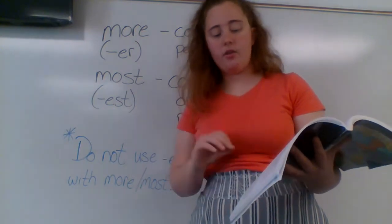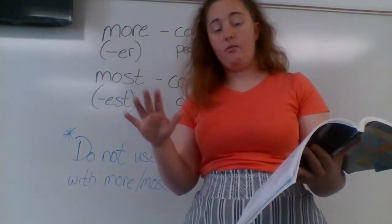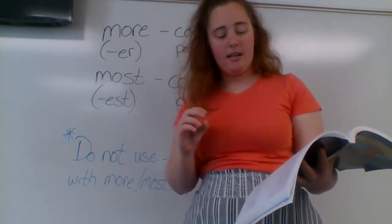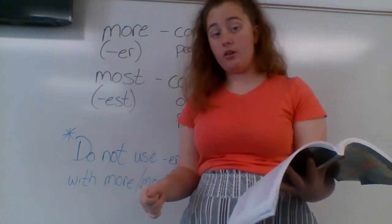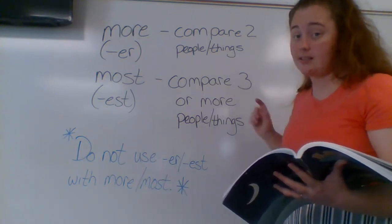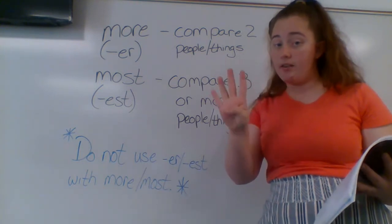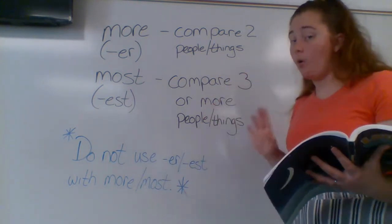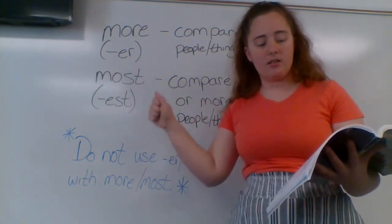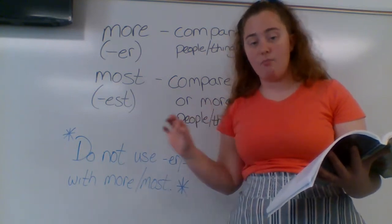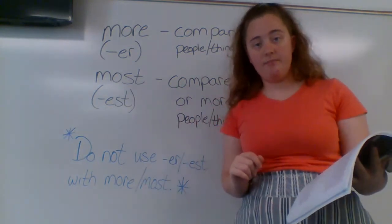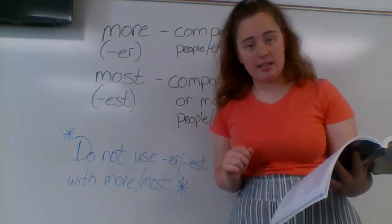Let's look at Think B. Circle the correct adjective in the box. Number one: if you compare your dog to three other dogs — how many things are we comparing? There's my dog plus three other dogs, that's four dogs — definitely three or more things. So I'm going to use either 'most' or EST. The options are smart, smarter, or smartest. You should have circled 'smartest.'